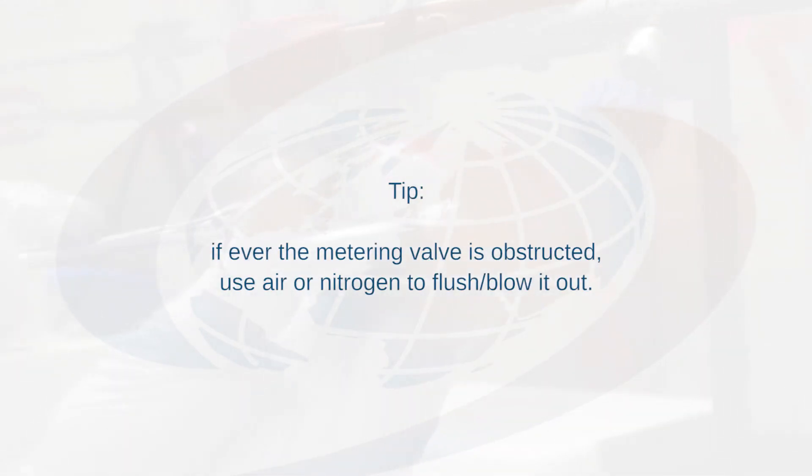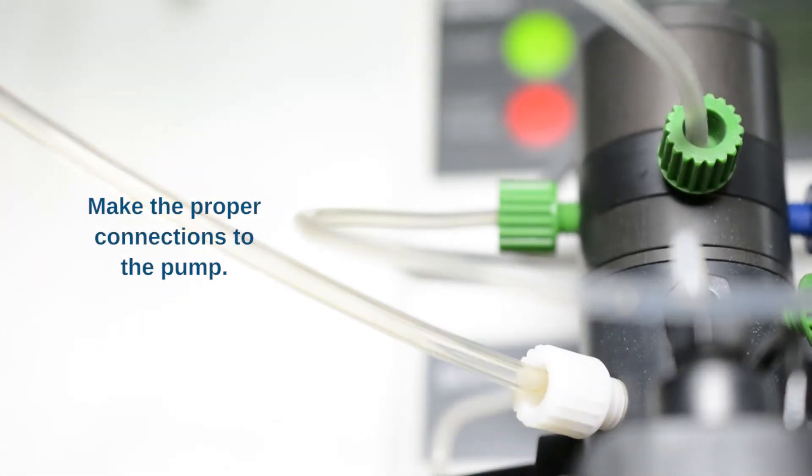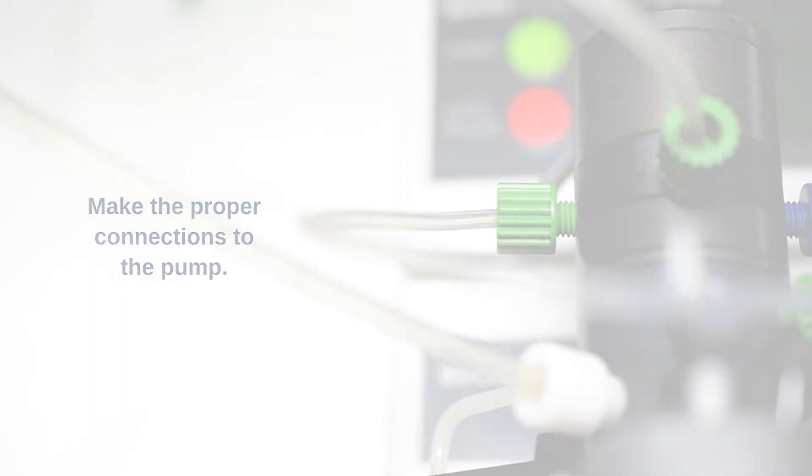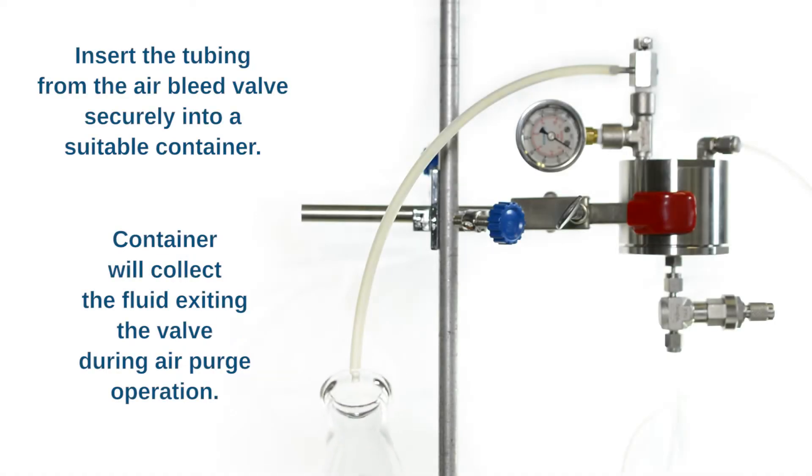If ever the metering valve is obstructed, use air or nitrogen to flush or blow it out. Make the proper connections to pump. Insert the tubing from the air bleed valve securely into a suitable container. Container will collect the fluid exiting the valve during the air purging.